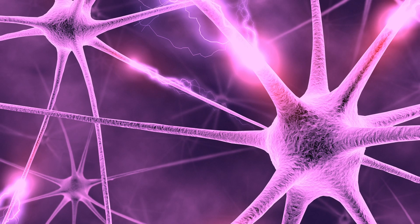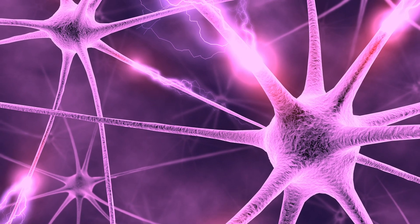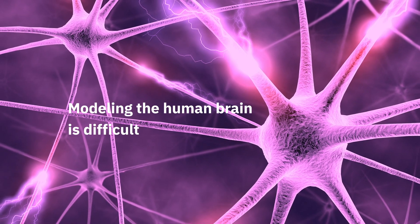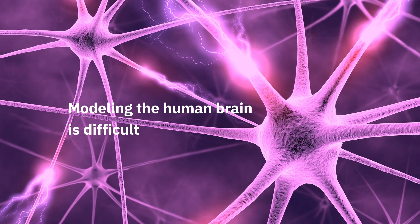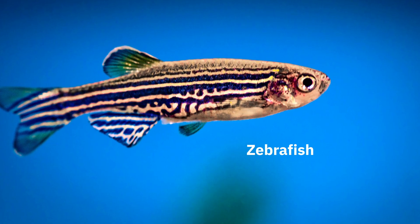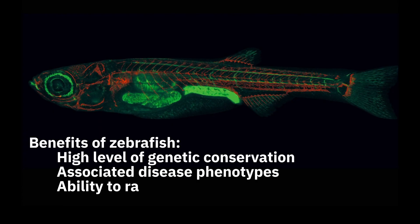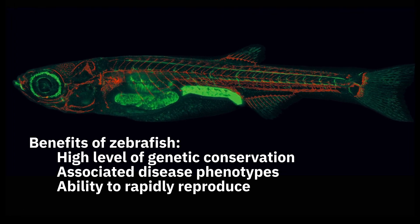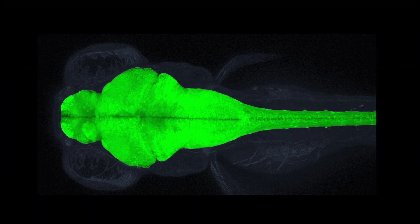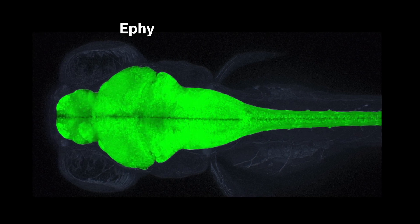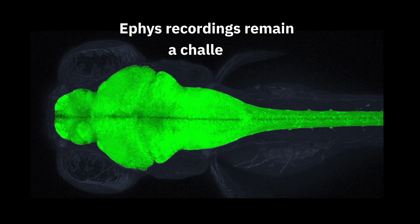Studying the human brain in vitro is challenging. Better models of the functioning brain are required to further our understanding of the human brain and neurological diseases. Zebrafish are freshwater fish used extensively in disease modeling and drug development due to their high level of genetic conservation, associated disease phenotypes, and ability to rapidly reproduce. Though a useful model for neural development and neurological disease, achieving high-quality electrophysiological readings from live zebrafish can still be a challenge.